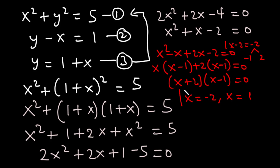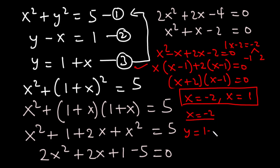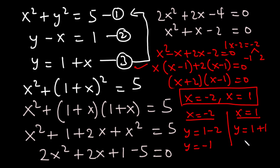Now let's substitute these values into equation three. When x is equal to negative two, y is equal to one plus negative two, which is negative one. When x is equal to one, y is equal to one plus one, which is two. So when x equals negative two, y equals negative one, and when x equals one, y equals two.